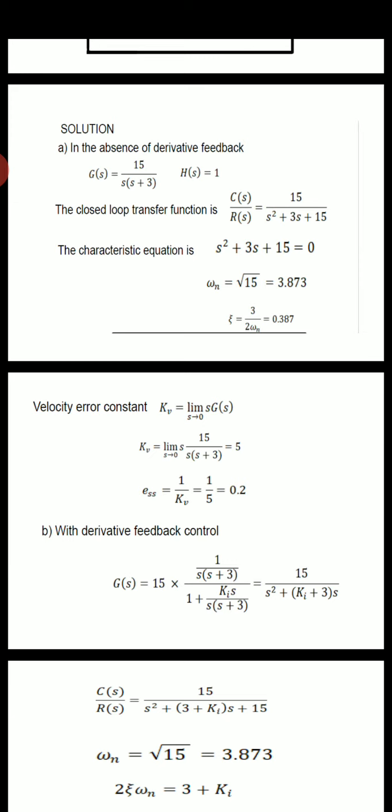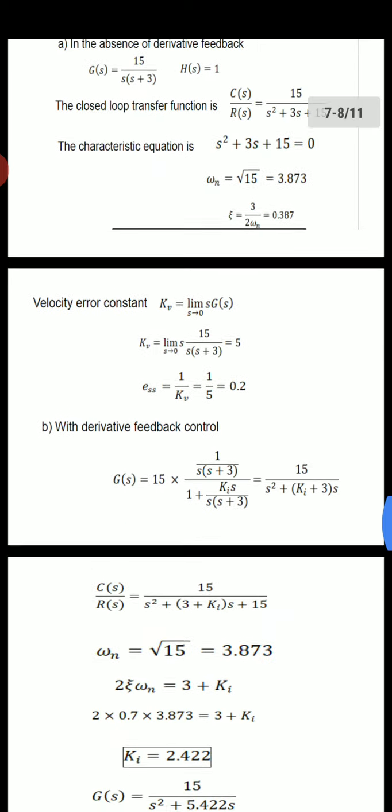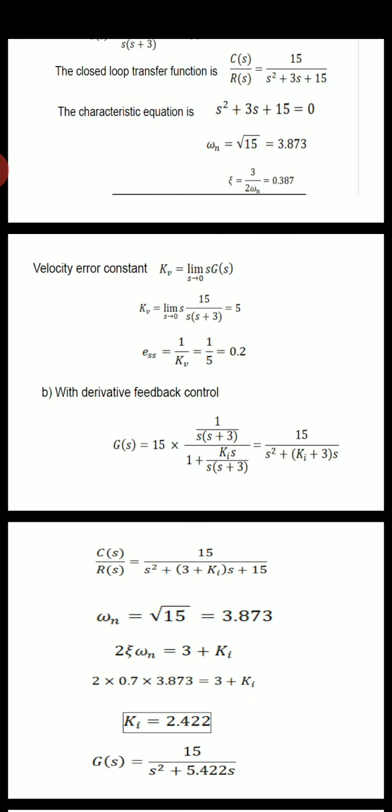With derivative feedback control, G(s) = 15 × [1/(s(s+3))] divided by [1 + kt·s/(s(s+3))], where kt is not equal to 0. This simplifies to 15 divided by (s² + (3 + ki)s). So C(s)/R(s) = 15 divided by (s² + (3 + ki)s + 15).